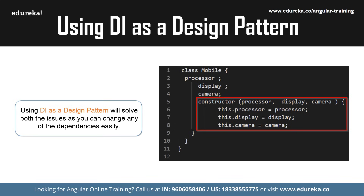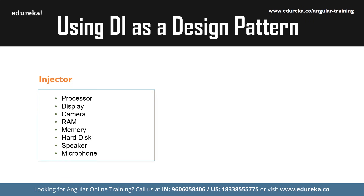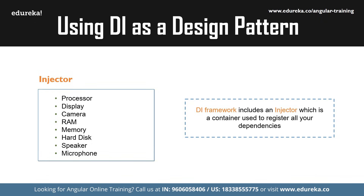We can conclude that using dependency injection makes the code very efficient and usable, binds loosely coupled components effectively, increases modularity, makes applications flexible and robust, and makes them easy to test and maintain. As the number of dependencies increases — for example RAM, memory, hard disk, speaker, microphone, etc. — it gets really difficult to manage the code. This is where the DI framework intervenes.